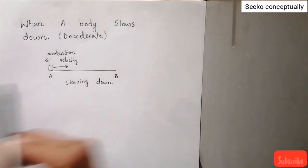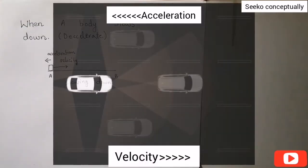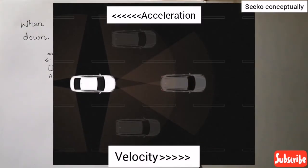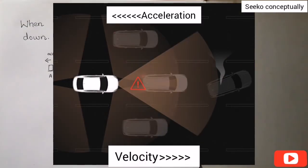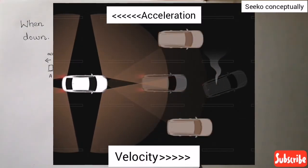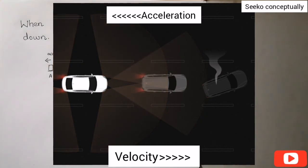So yes, a body can have velocity and acceleration in opposite directions if the body is slowing down.